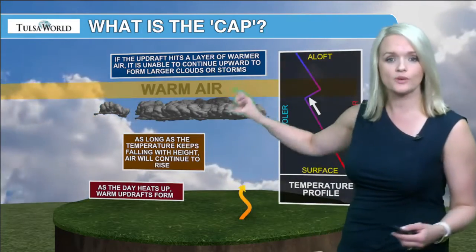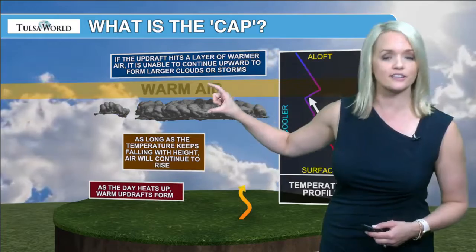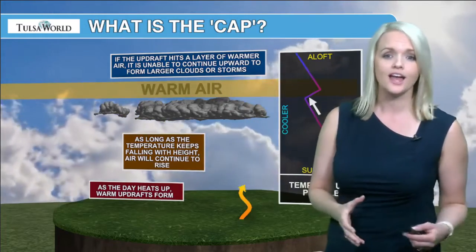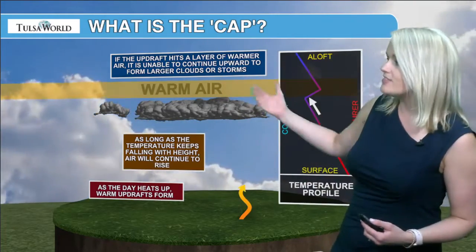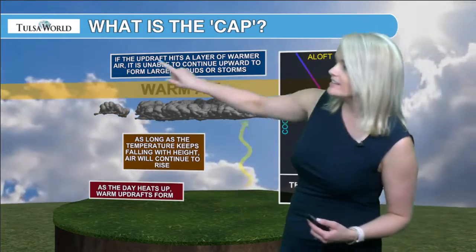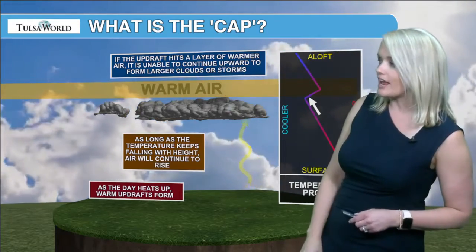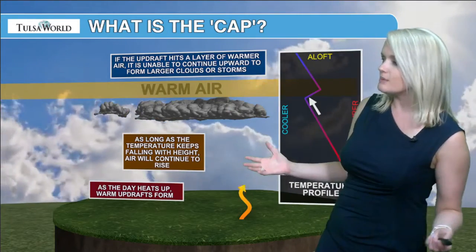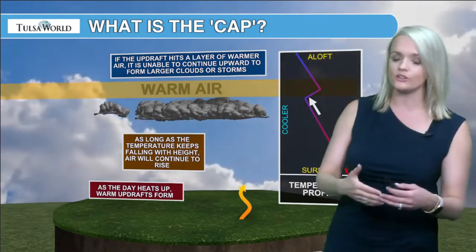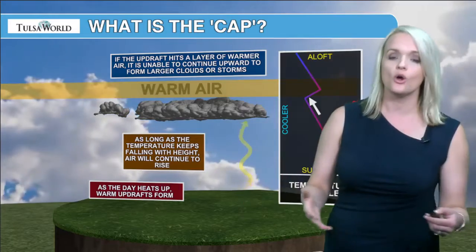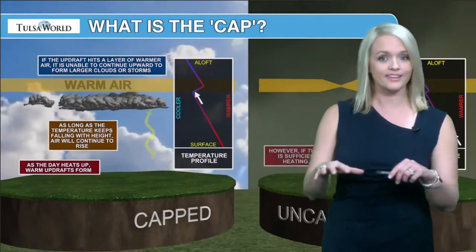However, there are times where you have a warmer pocket of air that's aloft — we're talking several thousand feet above the Earth's surface. At that point, the updraft is going to hit that layer of warmer air and then it's unable to continue moving upward to form any larger clouds or storms. So again, it puts a lid on it.